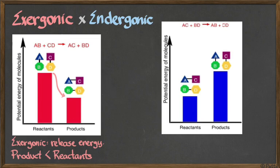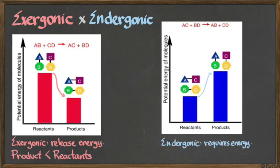The alternative - the other way - is to have an endergonic reaction. In this example, if you want AC plus BD to be transformed back into AB plus CD, you are going to need to put in energy. This chemical reaction requires energy because the products are more energetic than the reactants. This is the idea of endergonic and exergonic.